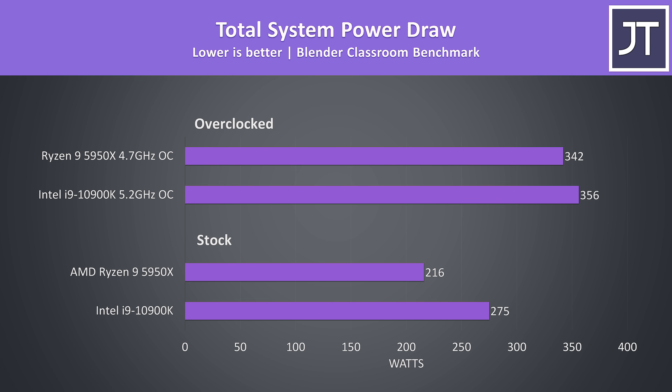When we look at total system power draw from the wall with the Blender test running, whether at stock or with both overclocked, the 5950X was using less power, which I think is seriously impressive. Just as a reminder, at stock in this test the 5950X was completing the task 52% faster, and 72% faster with both overclocked, so using less power and performing better is a serious win.